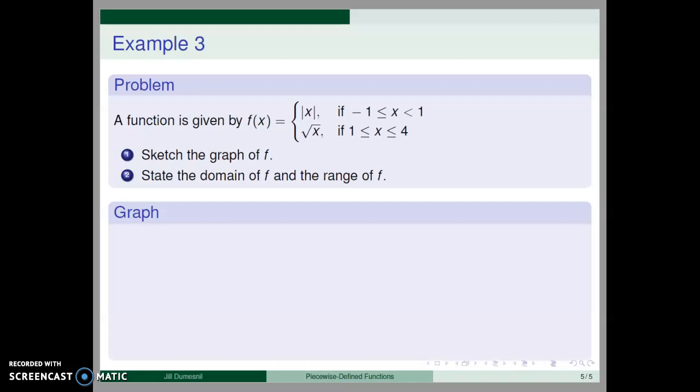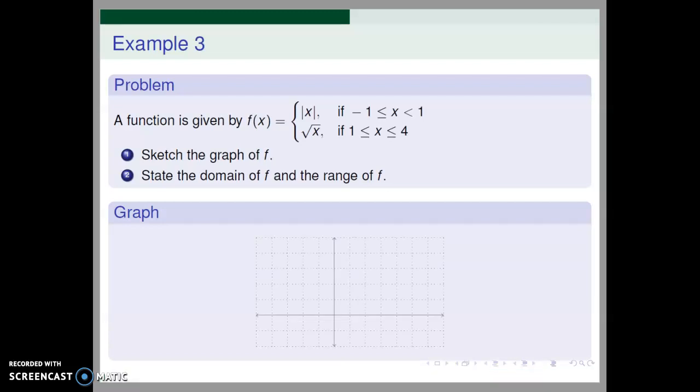We'll start with the graph, draw a grid, and then we'll graph absolute value of x for x between plus and minus 1. We include the point -1, but we don't include the absolute value to find f(1).